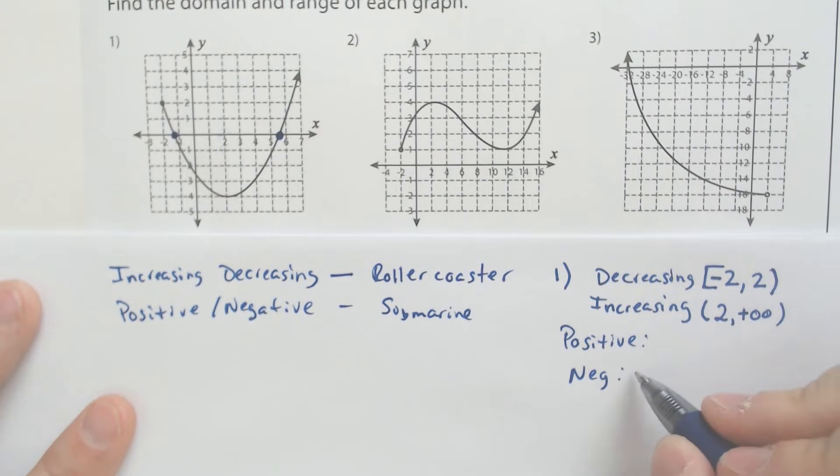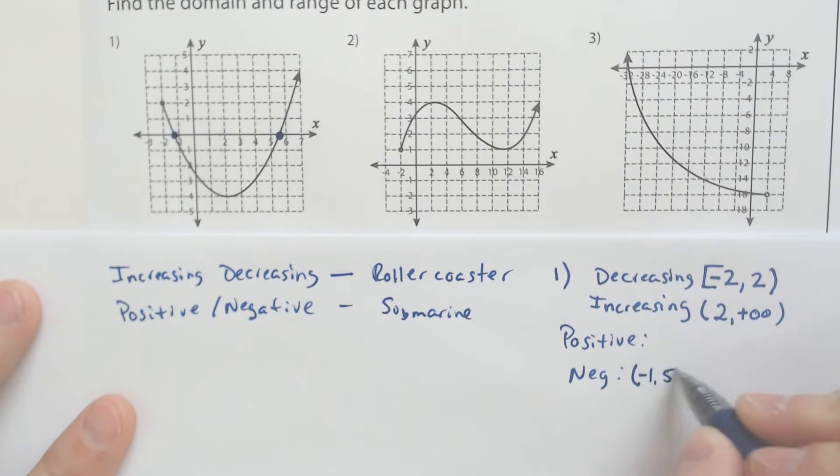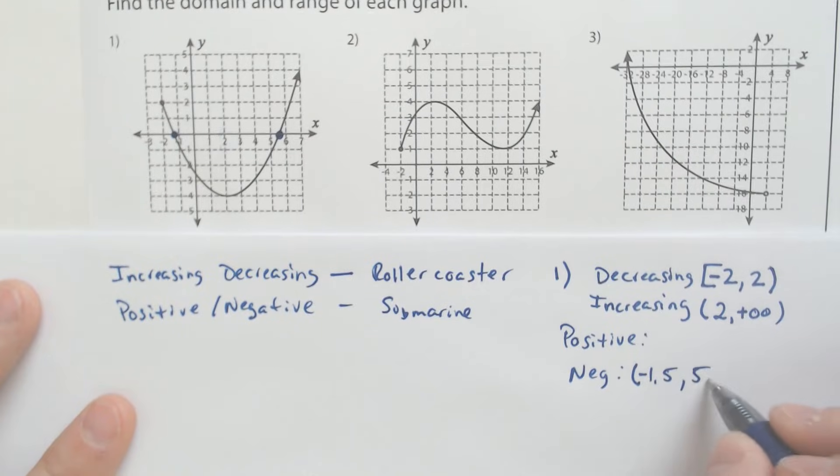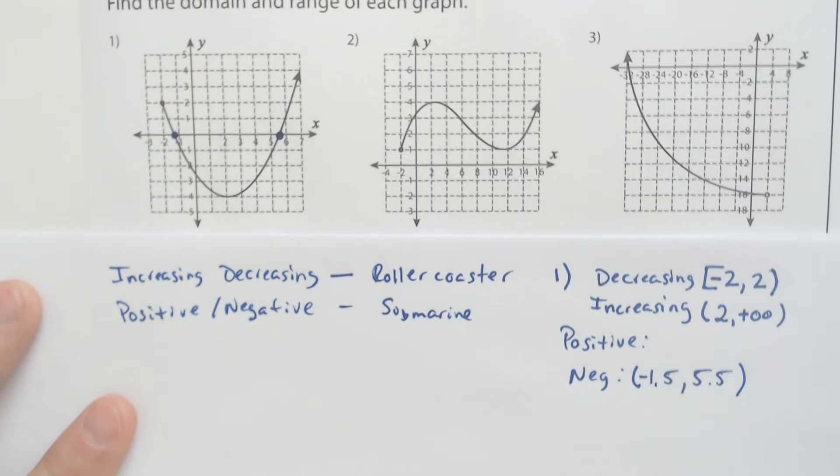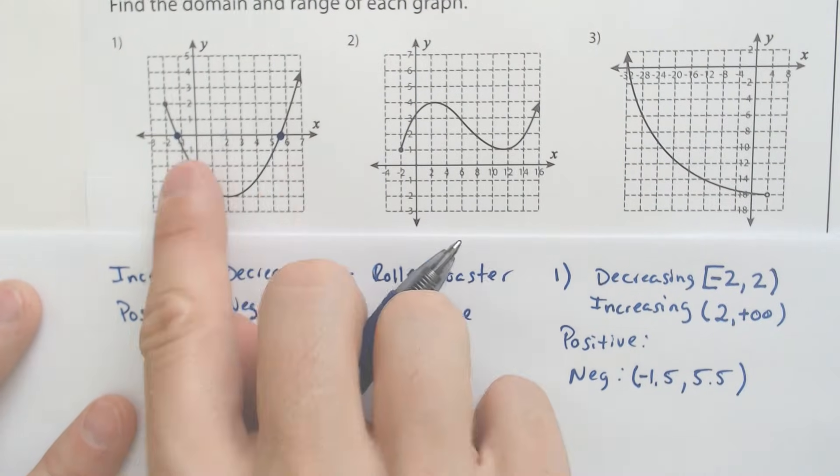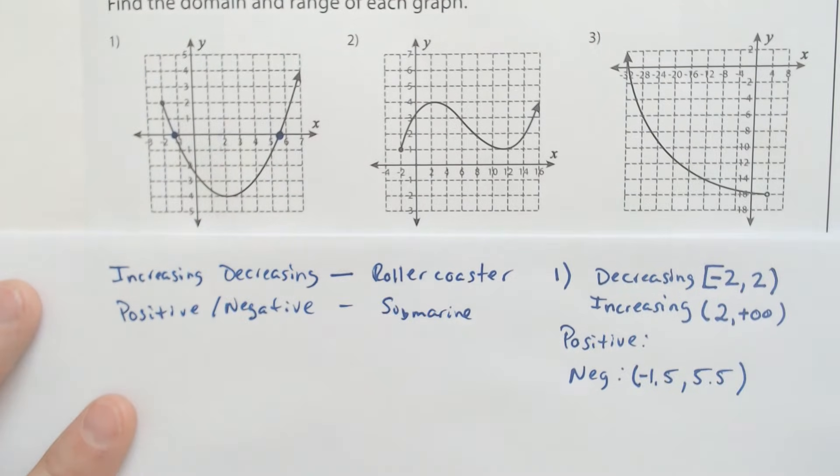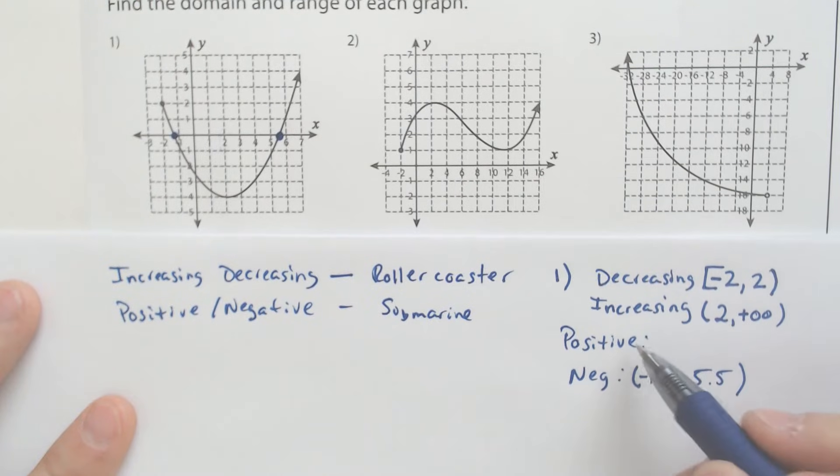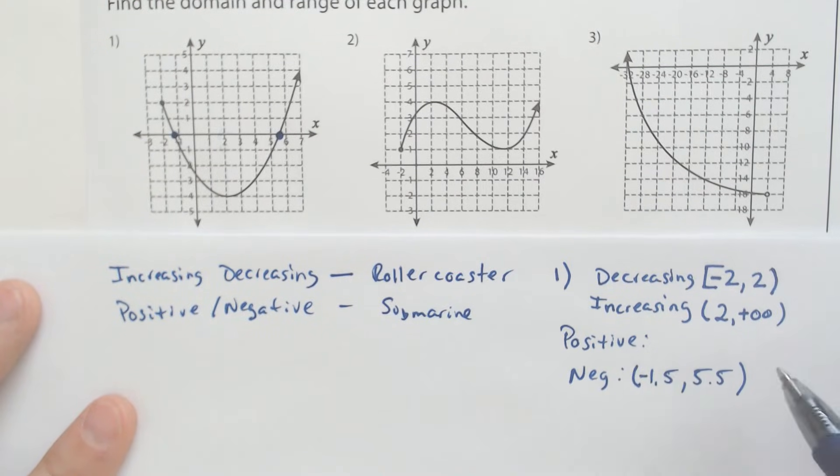So we are negative from negative 1.5 to 5.5, not included, not including because at that moment we're breaching the water. We're not negative nor positive. We are just at water level.